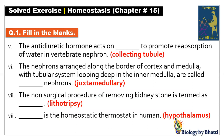Number 6: The nephrons arranged along the border of cortex and medulla with tubular system looping deep in the inner medulla are called juxtamedullary nephrons — that is the definition. Number 7: The non-surgical procedure of removing kidney stones is termed as lithotripsy.